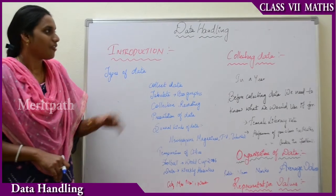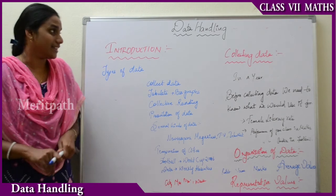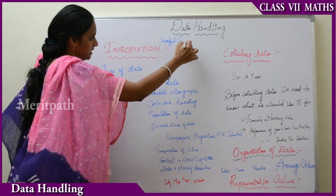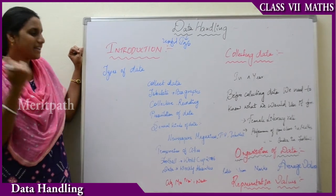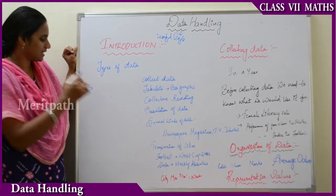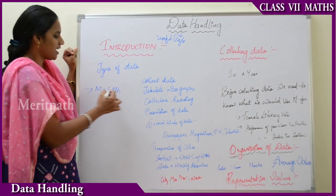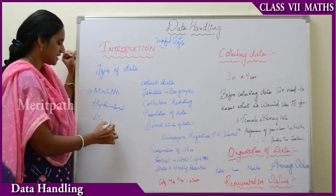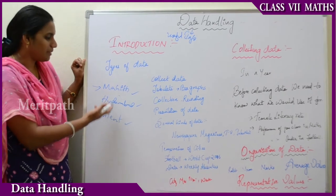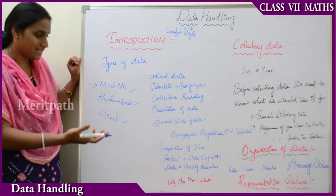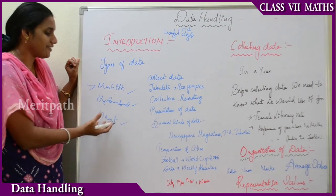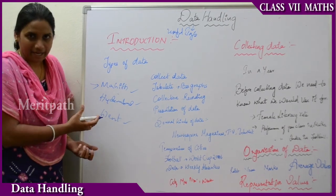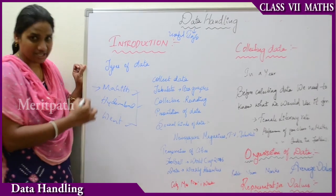This is data handling. What do you mean by data and data handling? Data means it is useful information. For example, let us take some words such as Mahit, Hyderabad, Pet. I have taken these three words. But is there any meaning with these three words? Did they form any sentence? That means these three words are raw material — they represent unuseful data.